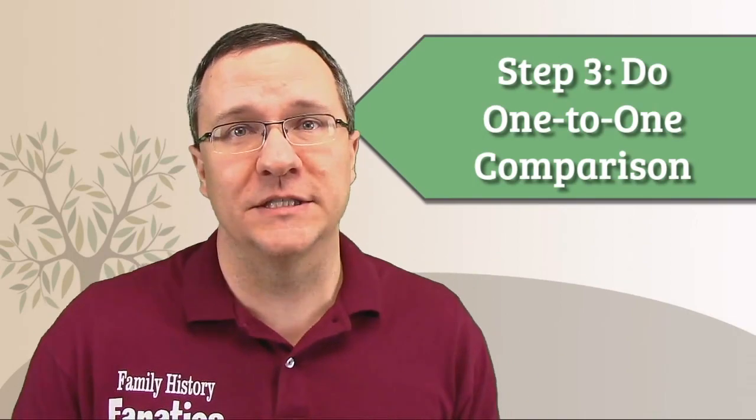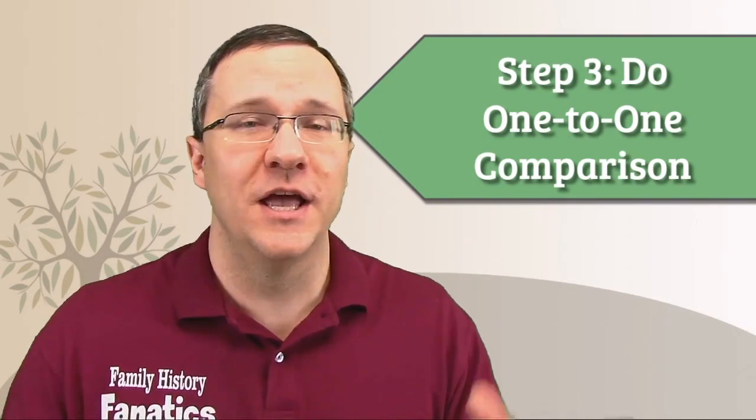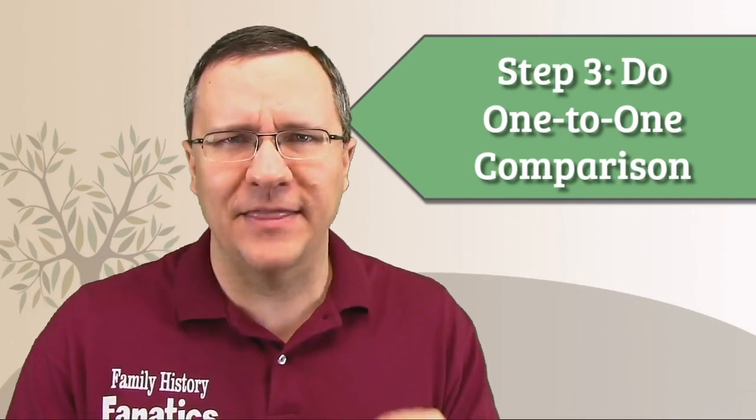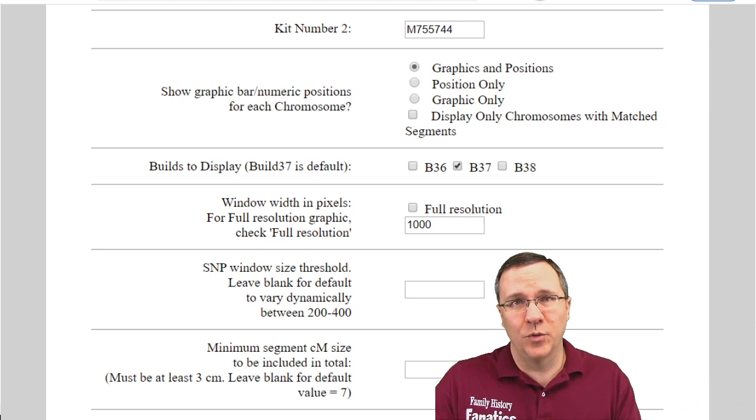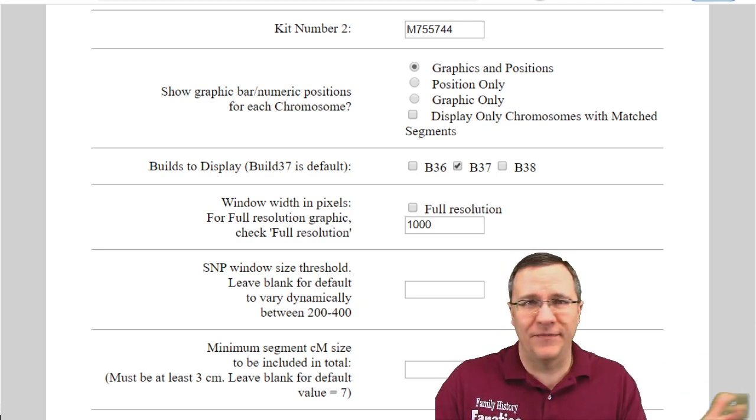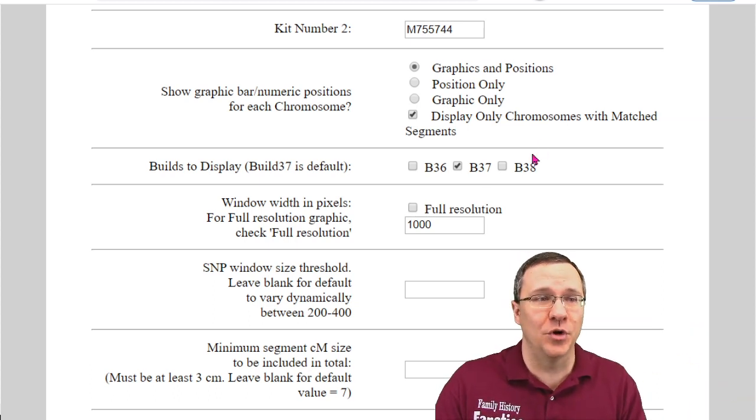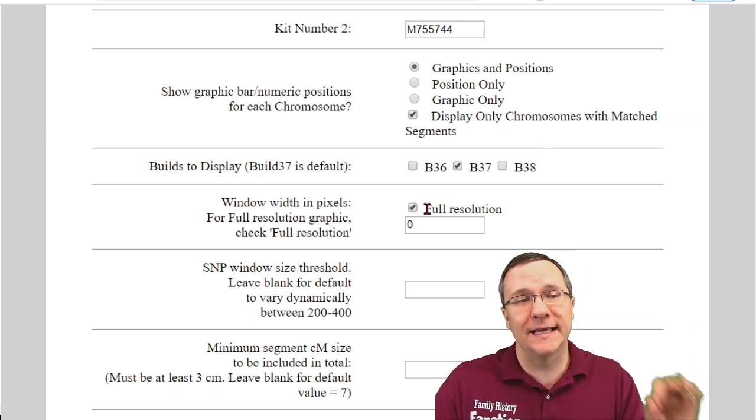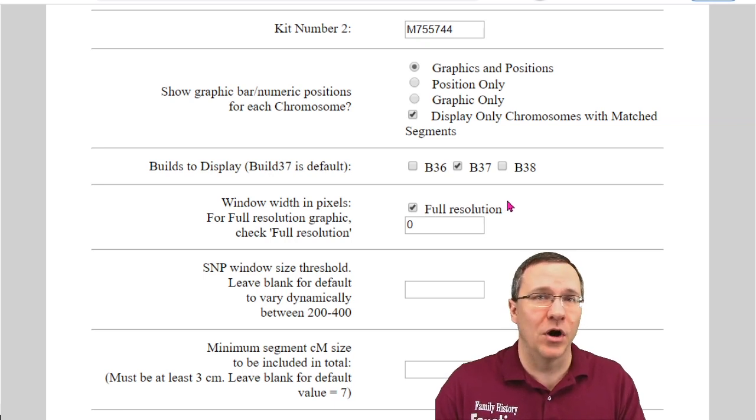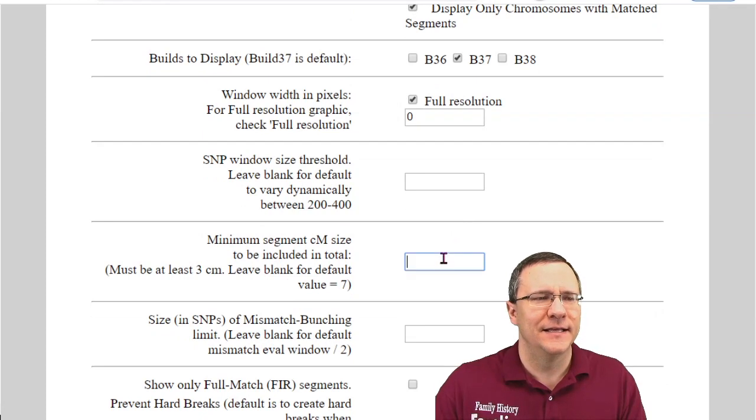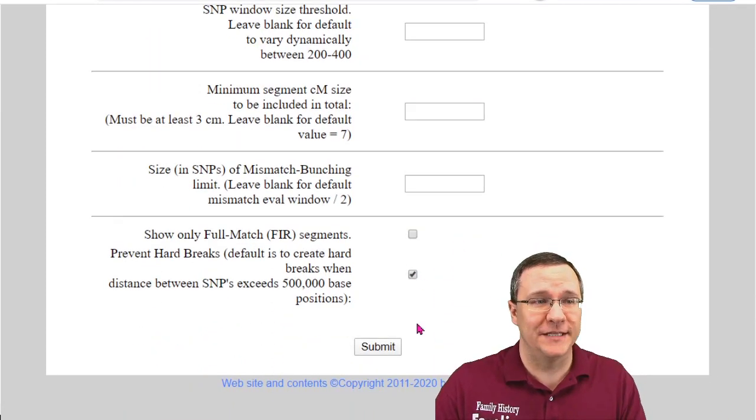We finished the segment search and we found a list of people that we want to compare ourselves to. Now we're going to use the one-to-one comparison. The key with the one-to-one comparison is we want to actually use the full resolution so we can see specifically at that location whether they're just a half match or whether they're potentially a full match with us. On our one-to-one, we put in the two kits. We want to take a look at the graphics and positions, but we only want to display the chromosomes that we match segments with. So we don't have all 22 chromosomes. We're probably just going to have one or maybe two chromosomes. Next is the most important thing, and that is to click on the full resolution so that you can actually narrow in on that segment and see whether or not you are a half match or a full match in that position. And then finally, we want to eliminate hard breaks. Then we click on submit.